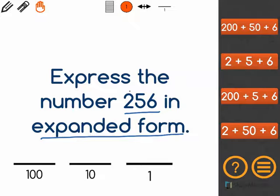I see that I have two hundreds. That means that I have two hundred. I see that I have five tens. Five tens is fifty.